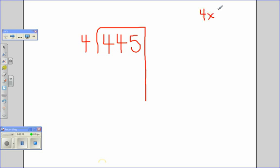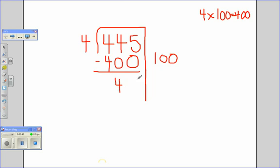I know that 4 times 100 equals 400. If I put 100 of each of these items into each of the 4 groups, that means I'm taking out 400 of my original 445. I'm going to subtract 400 from my original 445, which now leaves me with 45.